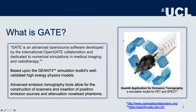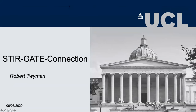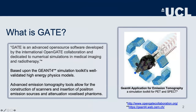Robbie begins sharing his screen. The STIR-GATE connection project was motivated by the fact that several people at UCL had been using GATE to generate data for STIR, but the code was ending up in different repositories. This project aims to bring all that work together into one common place, streamlining the process and making it easier to build upon. Much of the work was done by previous PhD students at UCL. He then begins to explain what GATE is.